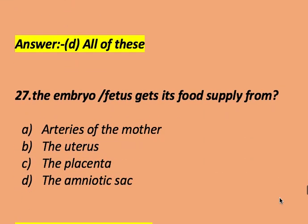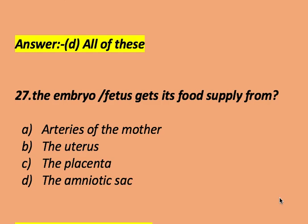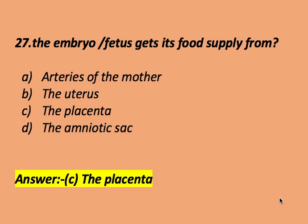The embryo or fetus gets its food supply from: the address of the mother, the uterus, the placenta, or the amniotic sac. The right answer is the placenta. The embryo or fetus gets its food supply from the placenta.